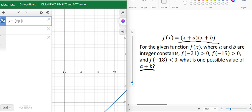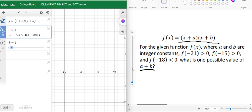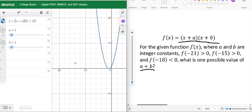Here, y equals (x + a)(x + b). So now we have to use slider in a or b. Let us use slider of a, 1 to 100, step 1. And similarly for b. We have to find f(-21), f(-15), and f(-18) in this graph.